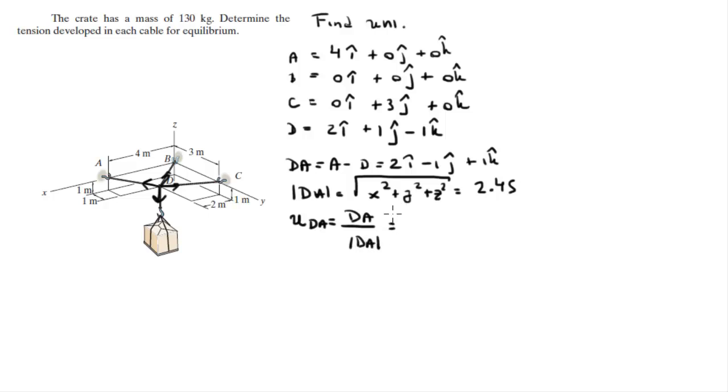And the unit vector DA is given by the vector DA divided by its own magnitude, and that is equal to 0.816 in the i minus 0.408 in the j plus 0.408 in the k.